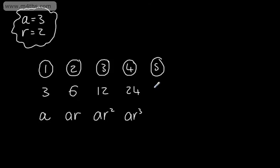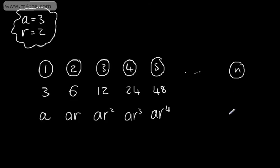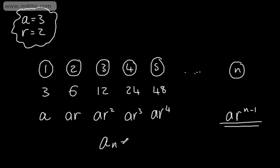The fifth term would be 48, and an expression would be ar to the fourth. We can see this power is 1 less than the value of n, such that if we went up to the nth term, our expression for that would be a·r to the power of n minus 1. This now gives us the nth term of a geometric sequence. We can say a sub n is equal to a multiplied by r to the power of n minus 1.